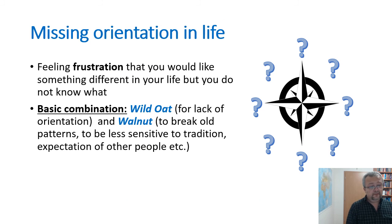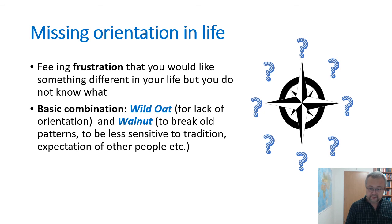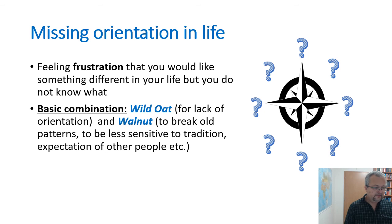For missing orientation in life — when people feel dissatisfied with their present life but do not know which direction to go — the basic combination is Wild Oat for lack of orientation, and Walnut to help break old patterns and start something completely new, even something others might consider unusual or unsuitable. This combination helps isolate the patient from the influence of other people and lets them decide independently what they wish for in life.